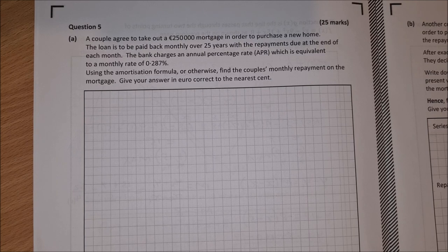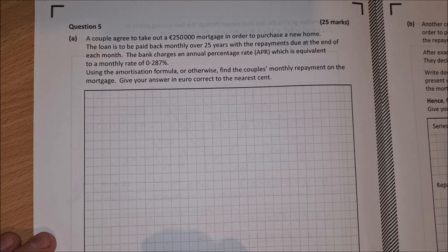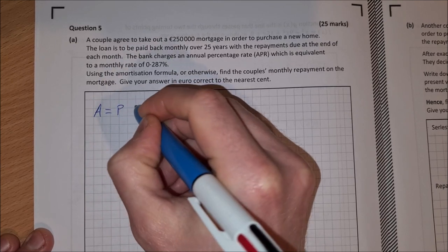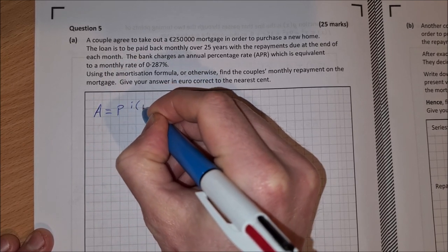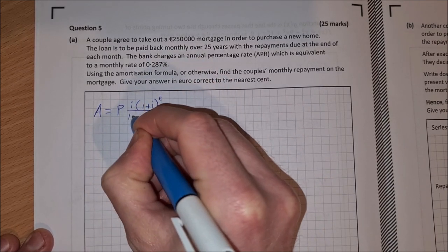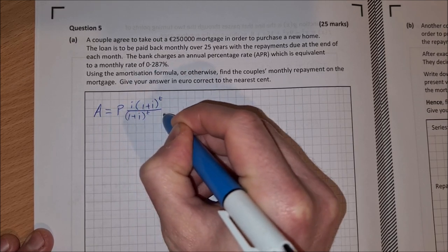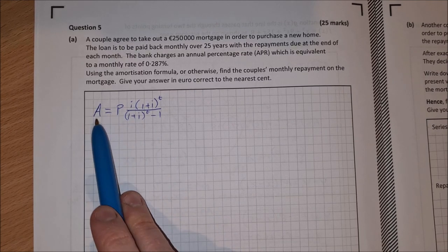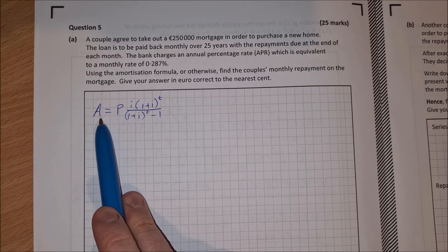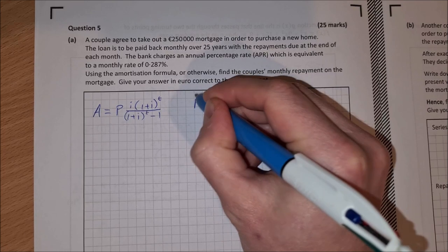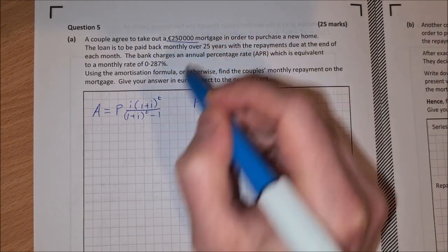So it says using the amortization formula or otherwise, so we'll go ahead and use the amortization formula which is A equals P times I times 1 plus I to the power of t over 1 plus I to the power of t minus 1. You'll get that in your log tables. So all we need to do for this, we're trying to find A which is the amount repayable per month and we need to fill in everything here. So P, that's our principal, that's how much is borrowed. So that's £250,000.